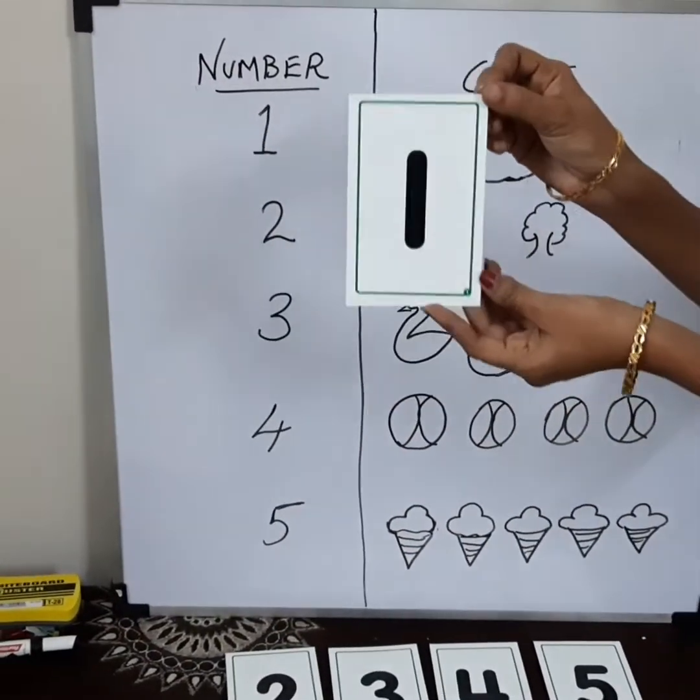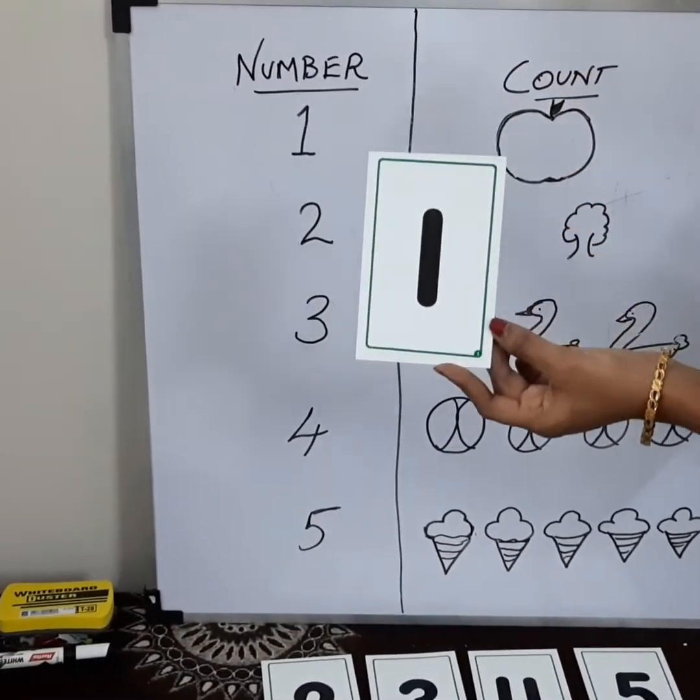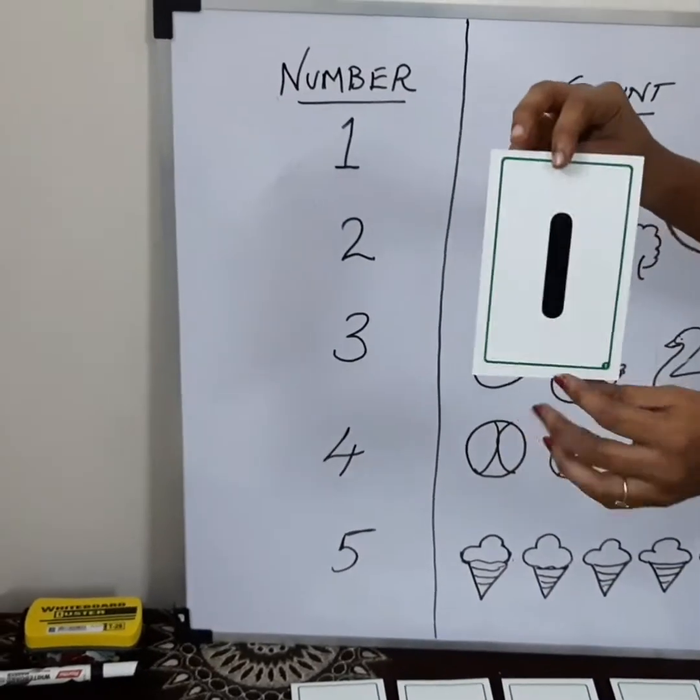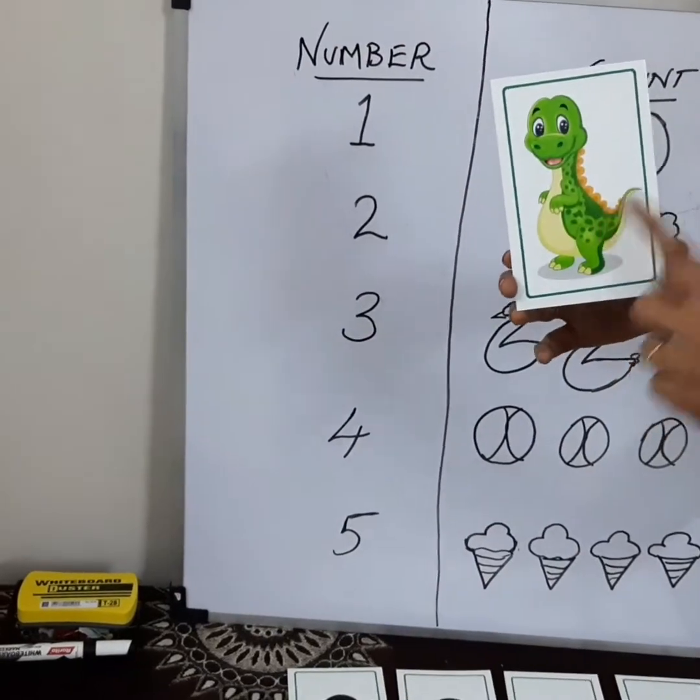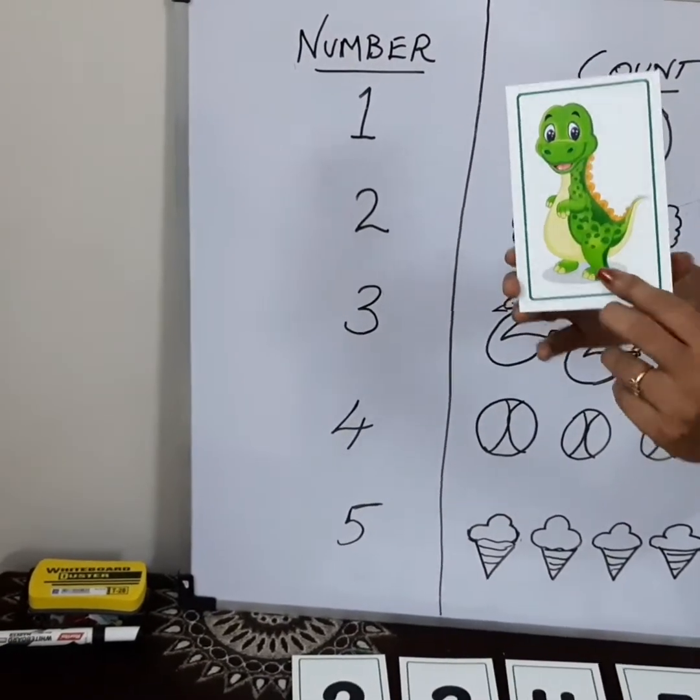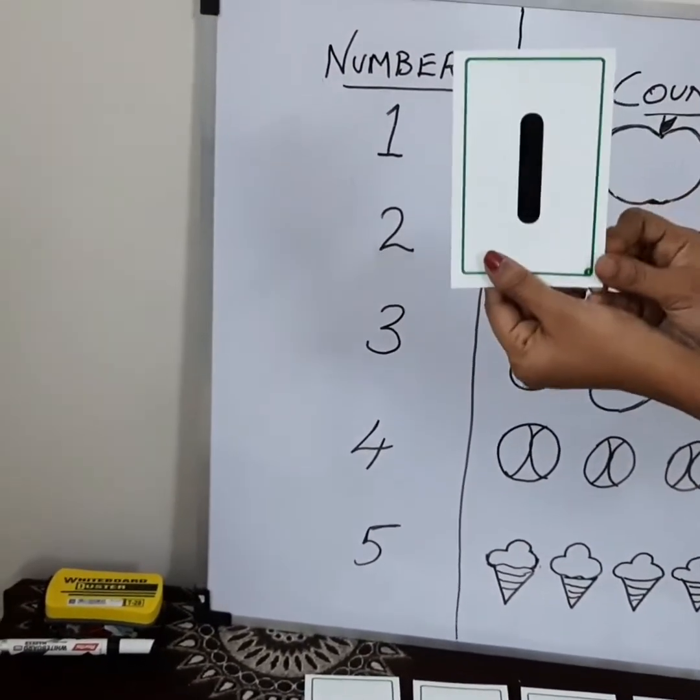What is this? This is number 1. Okay? Yes! See? 1. 1 apple number. This is 1. 1 crocodile here. So this is number 1.